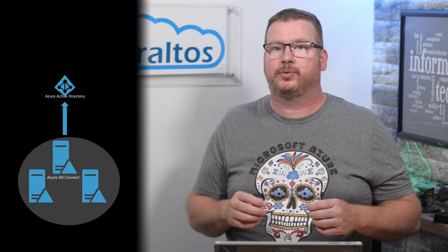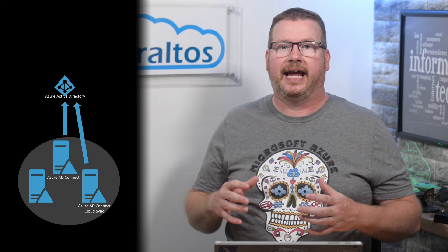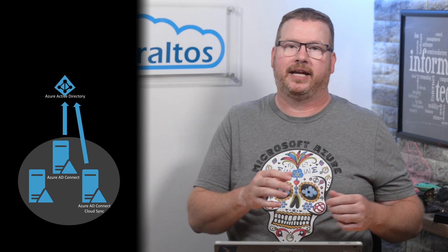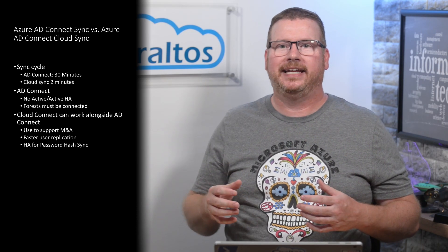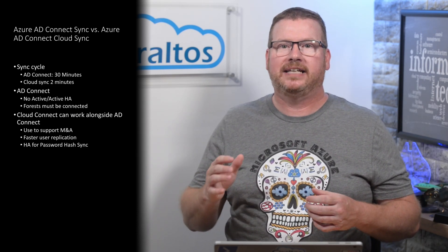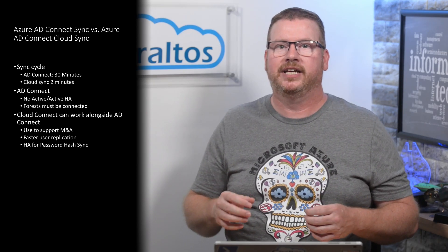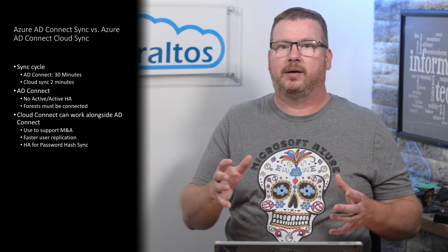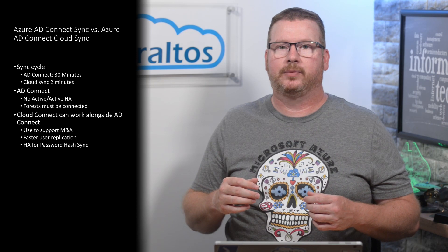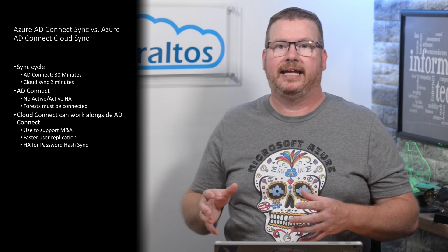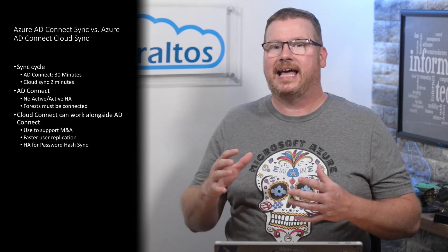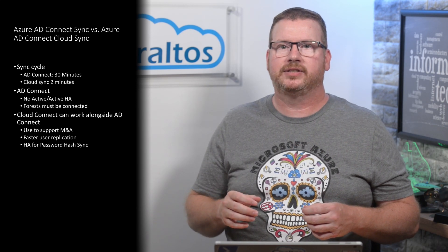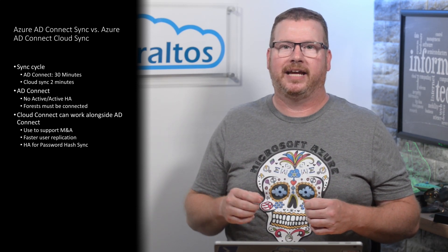Before you rule out Cloud Sync, there's one more thing to consider: Cloud Sync can be used in tandem with AD Connect. For example, it could provide faster replication for objects such as users in Azure AD and provide high availability for password hash synchronization by adding another replication agent. Azure AD Connect Cloud Sync has a distinct set of features that makes it a consideration for any small to medium organization looking for directory synchronization, or for organizations that need to bring in users from a disconnected domain such as with mergers and acquisitions. It can also augment existing AD Connect implementations. Cloud Sync is not a replacement for AD Connect, however, and some limitations will prevent many medium and large organizations from using it as their primary identity replication solution.